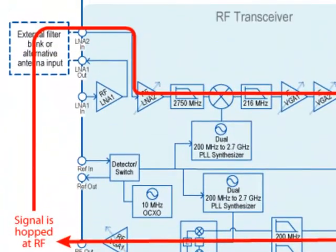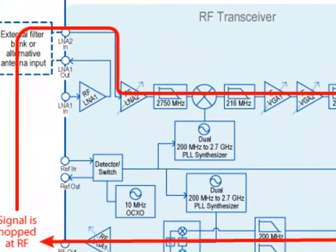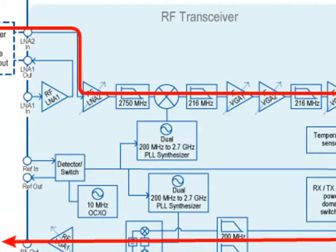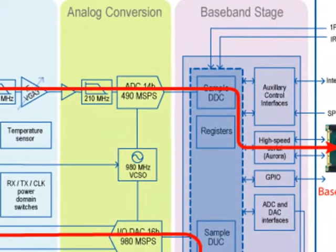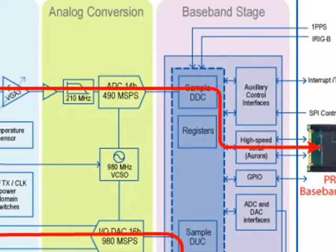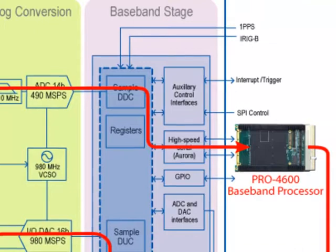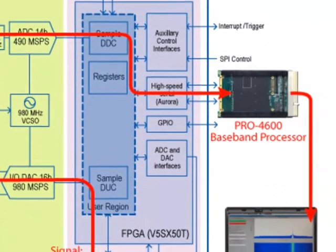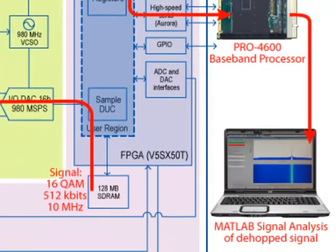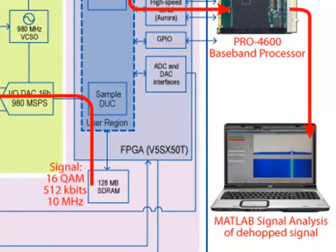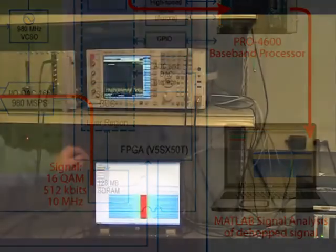We're also looping the same signal back through the splitter here, through some attenuation, back into the RF4902's receiver stage, where it's de-hopped in the RF stage. It's digitized in the high-speed ADC. We send it through the FPGA. We put it through a digital down-converter to baseband. We then send the baseband signals through the Pro4600 and Ethernet to the PC, where we're running MATLAB, to do some spectrum analysis on the received signal.